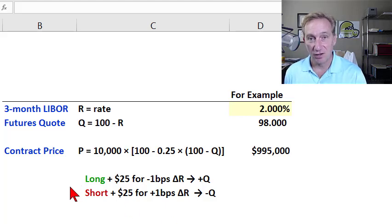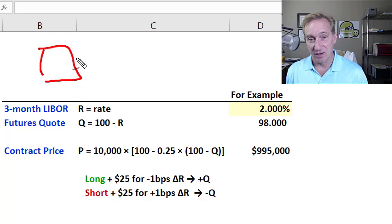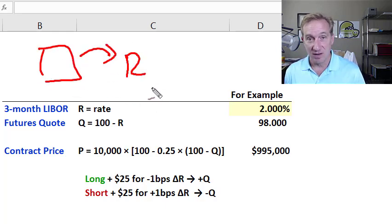I'd like to illustrate a Eurodollar futures contract, an interest rate derivative where the contract references the three-month LIBOR. We want to understand the contract price that embeds the futures quote.